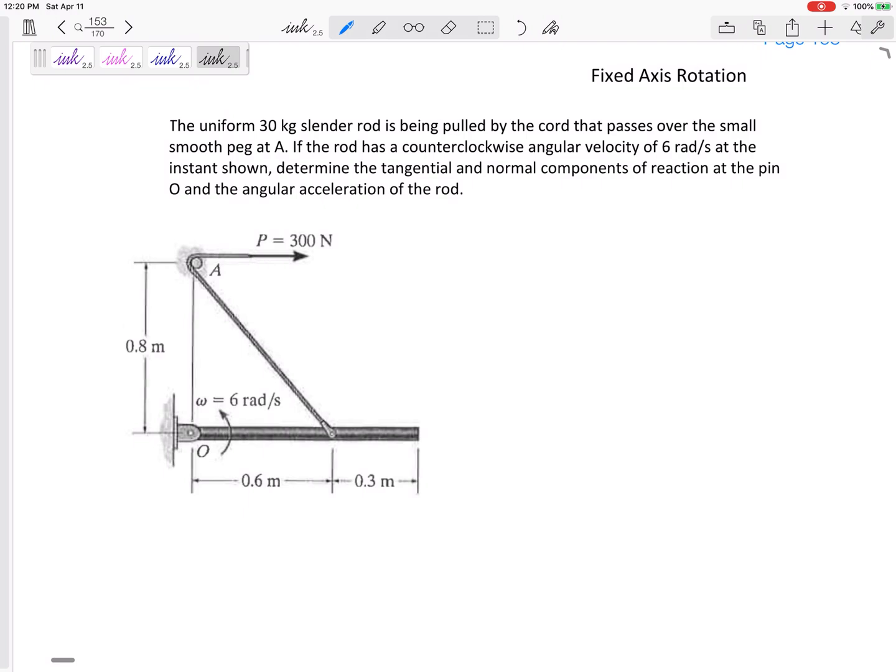30 kilograms slender rod being pulled by the cord. If the rod has a counterclockwise angular velocity of 6 radians per second at the instant shown. Right now we're only looking at snapshots just at this instant because once we start moving things our free body diagram is going to change. We're just looking at free body diagram in this instant. Determine the tangential and normal components of the reaction of the pin O and the angular acceleration of the rod.